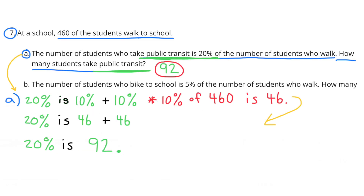Number 7. At a school, 460 of the students walk to school. A. The number of students who take public transit is 20% of the number of students who walk. How many students take public transit? 20% is 10% plus 10%, and 10% of 460 is 46. So 20% is 46 plus 46, which is 92. So 92 students are taking public transit to school.